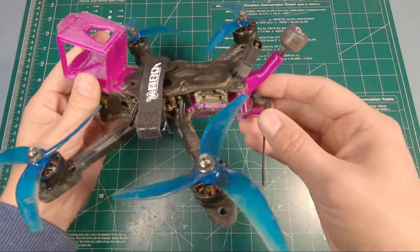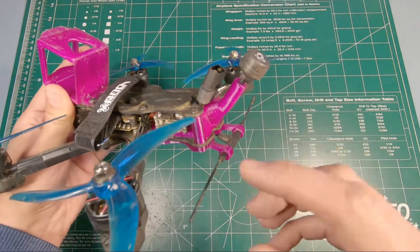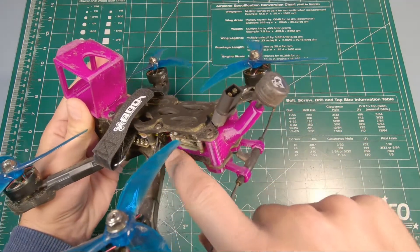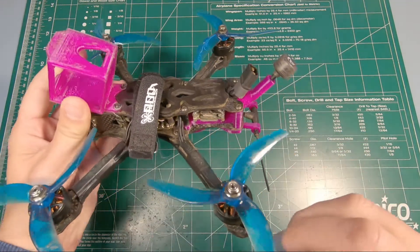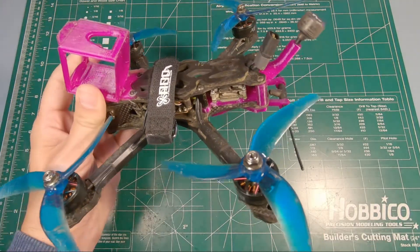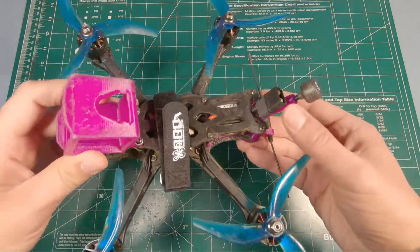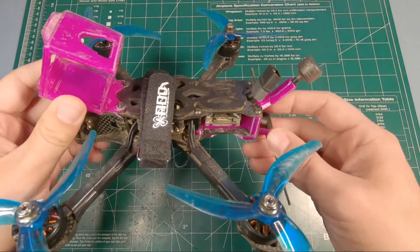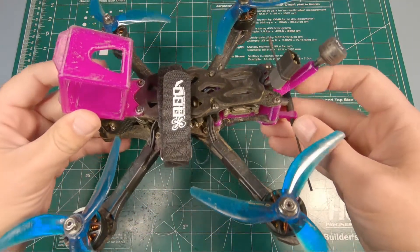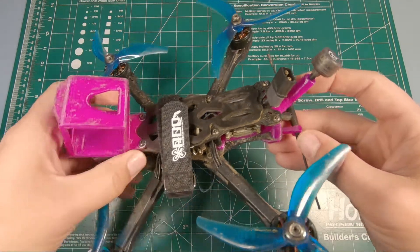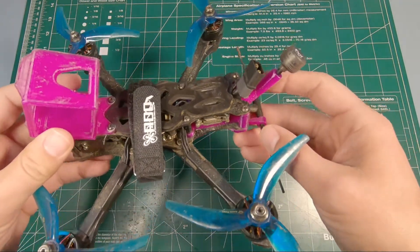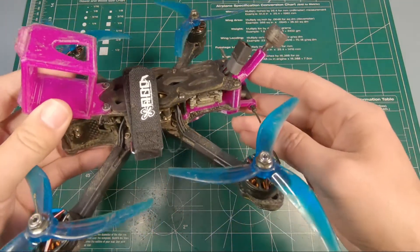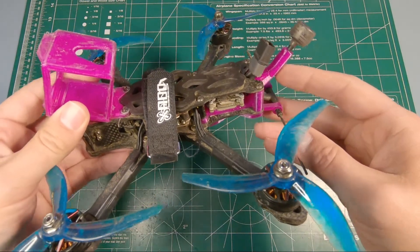Specifically, I want to talk about this mount right here. This is a Caddx Vista adapter, fits right on the Apex HD frame. This frame was designed to be used with an Air Unit, but the Air Unit's really not that great. I mean, it's amazing for what it does and when it came out it was really cool, but it's big. The onboard recording kind of sucks, it honestly never worked for me.